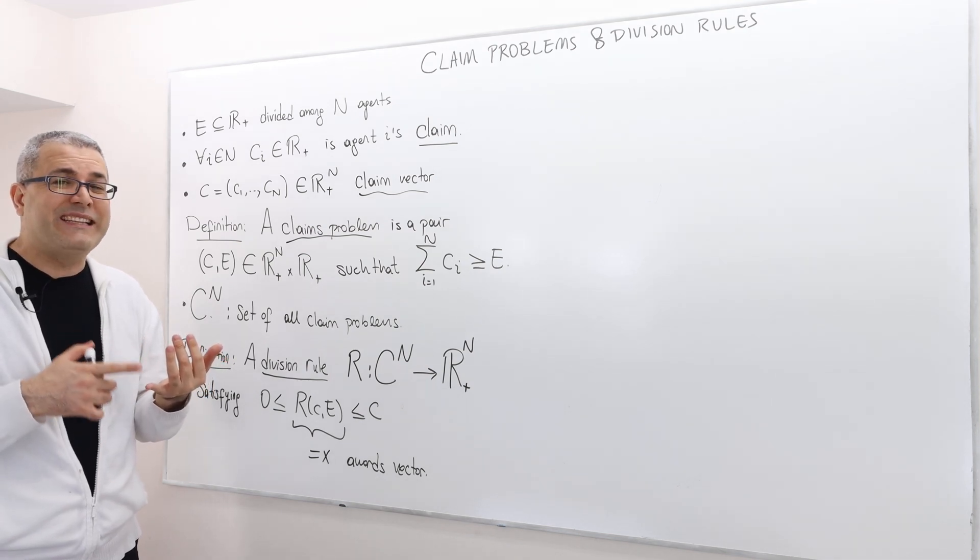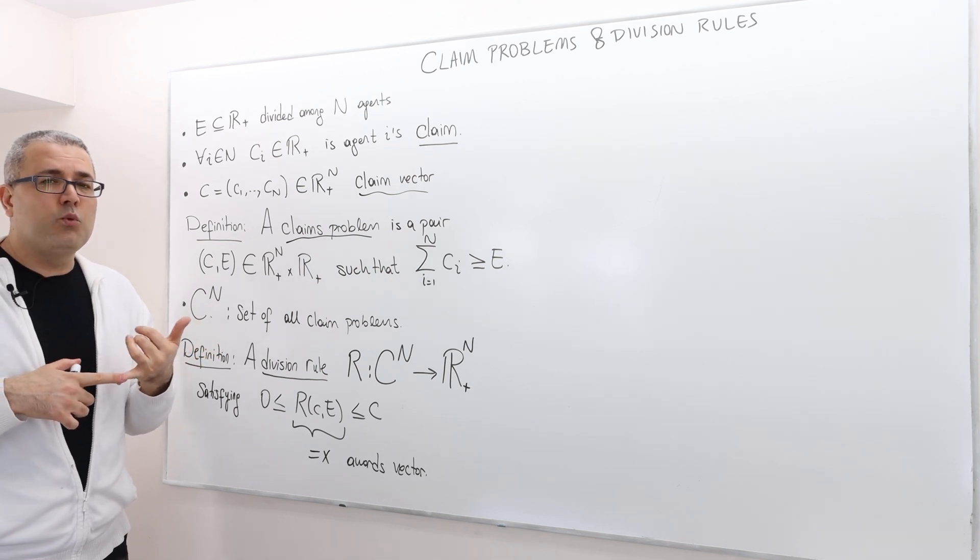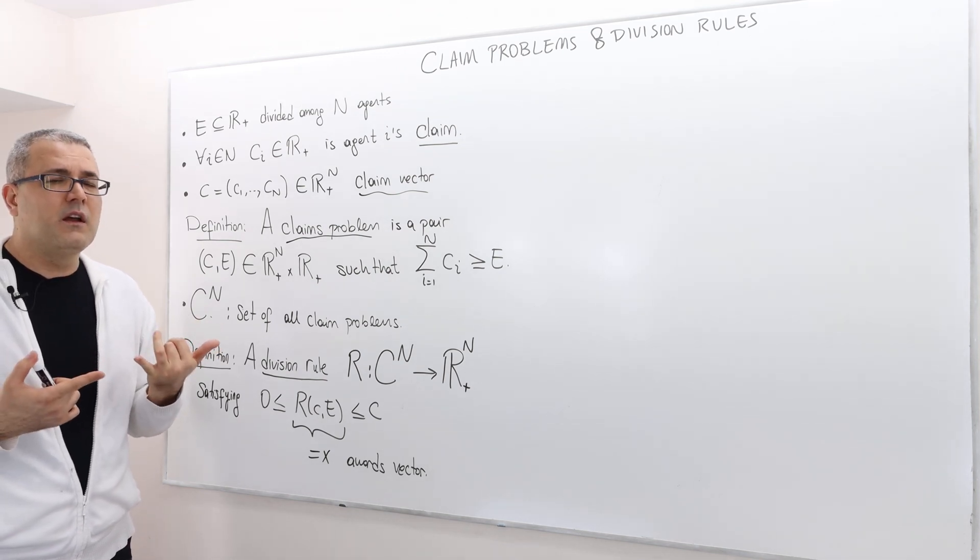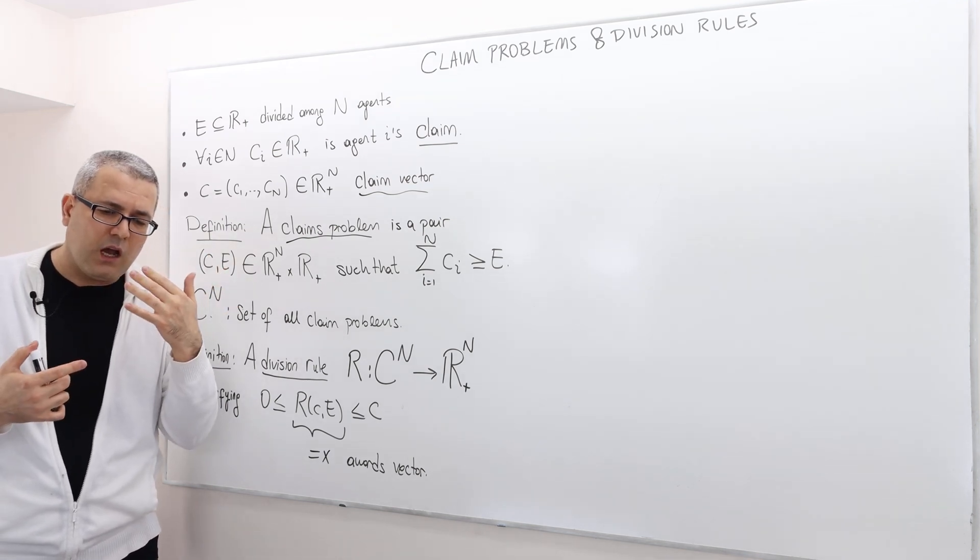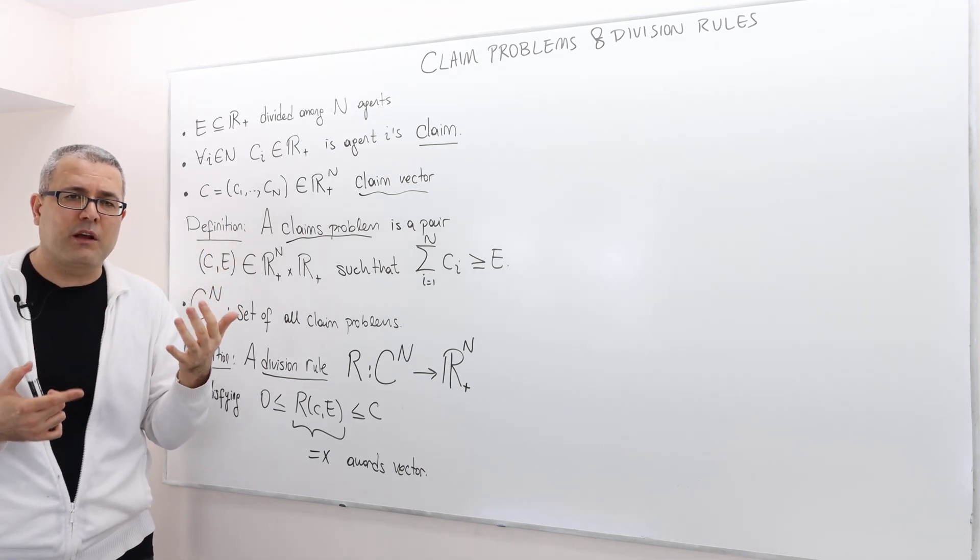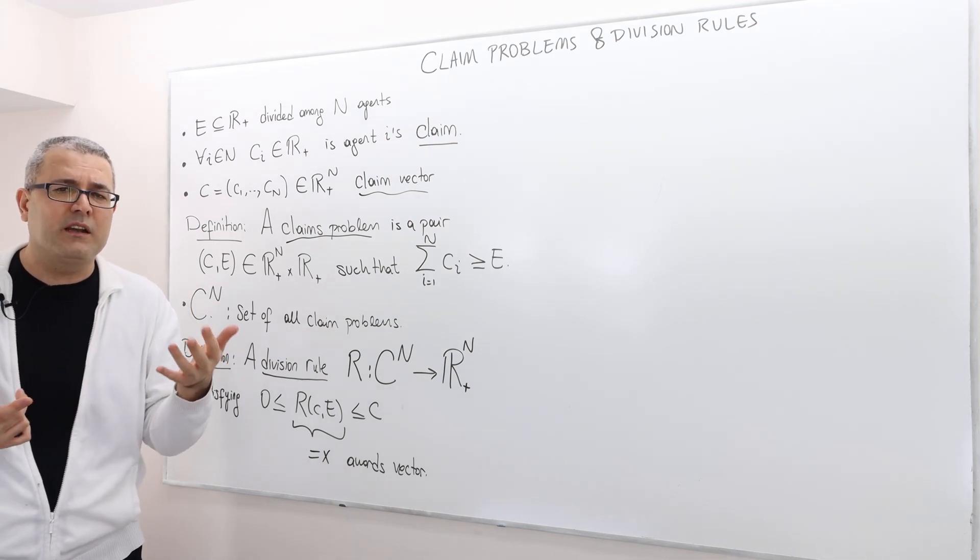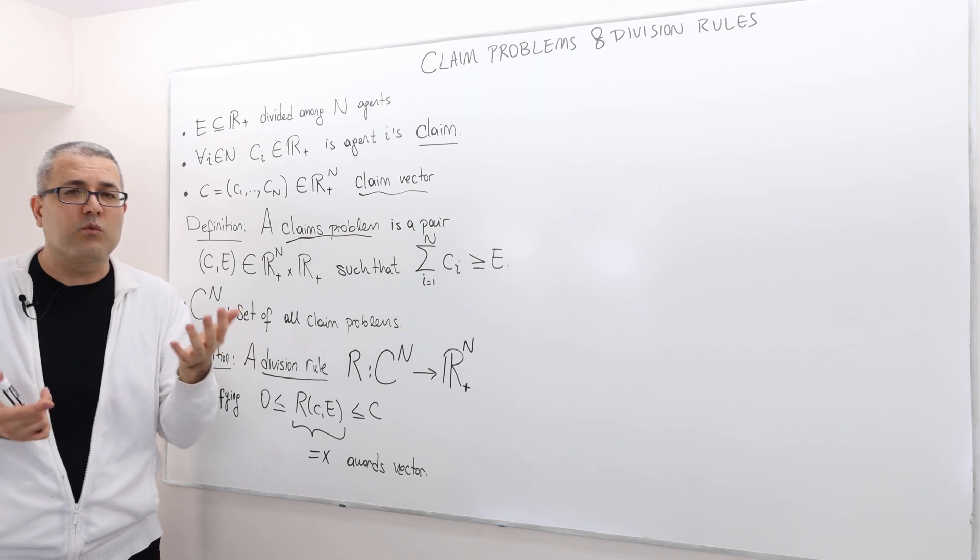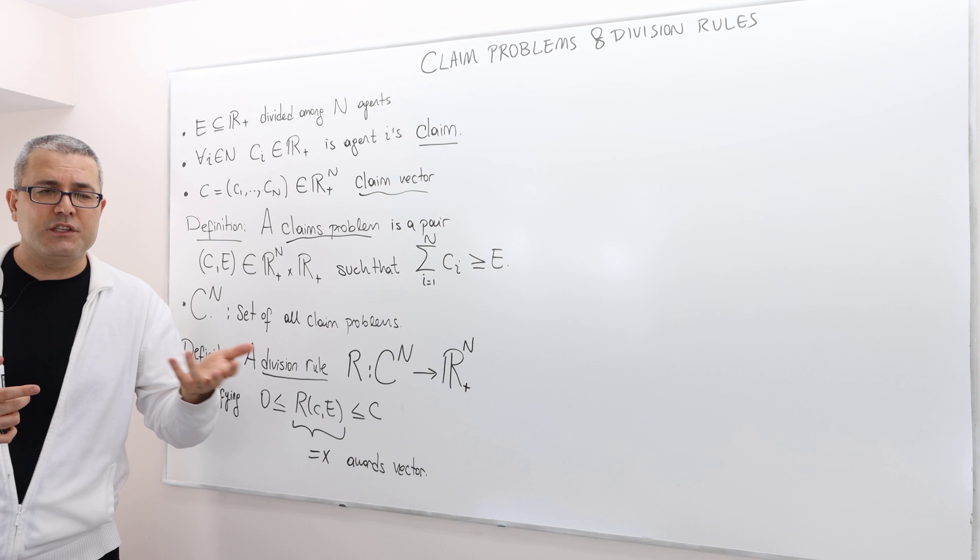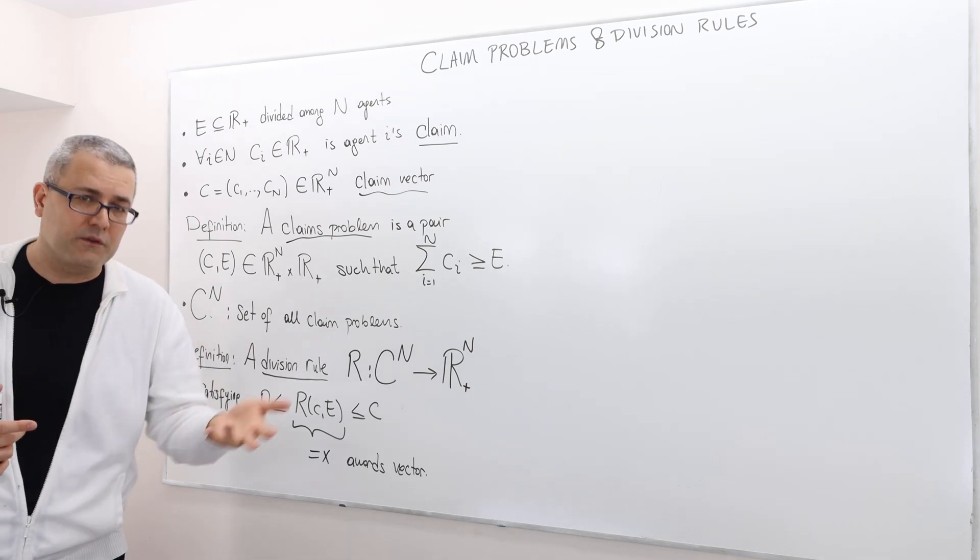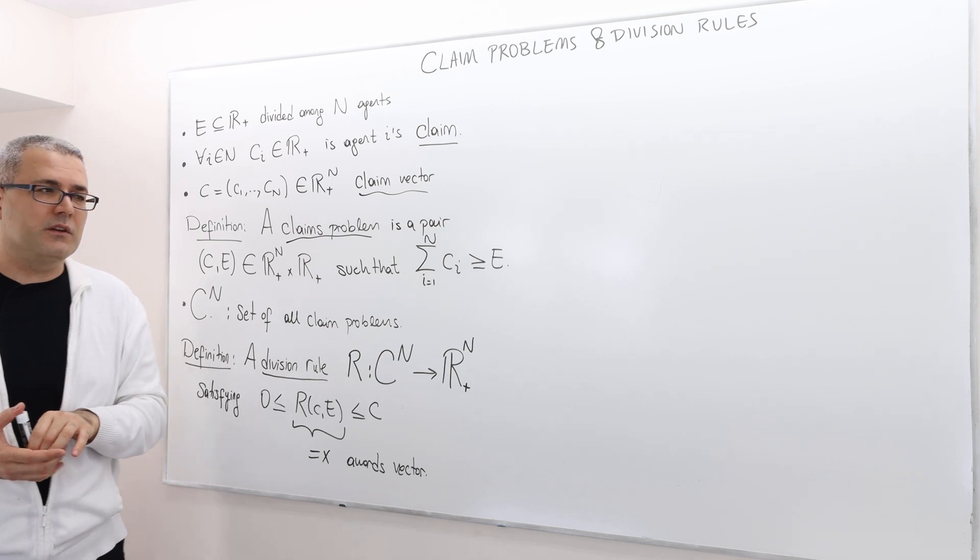So similar to the bargaining problem, and in fact, we can solve this problem as a bargaining problem. We can map every claim problem to some bargaining problem. But the thing is, we prefer to analyze them separately than the bargaining problem, because remember, in the bargaining problems, we did have disagreement points. So here in the claims problem, we don't have a disagreement point, exogenously given, right? I mean, if these two guys, whose business bankrupt, if they cannot make an agreement, what is going to be their disagreement point? Obviously, you can say the disagreement point would be whatever the judge is going to decide if they go to court.